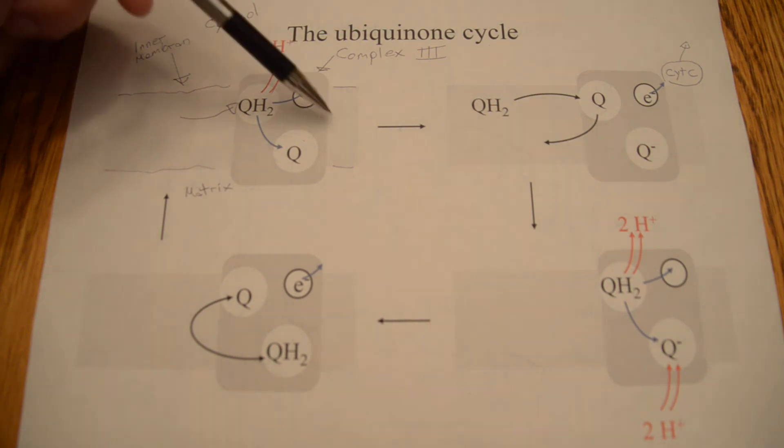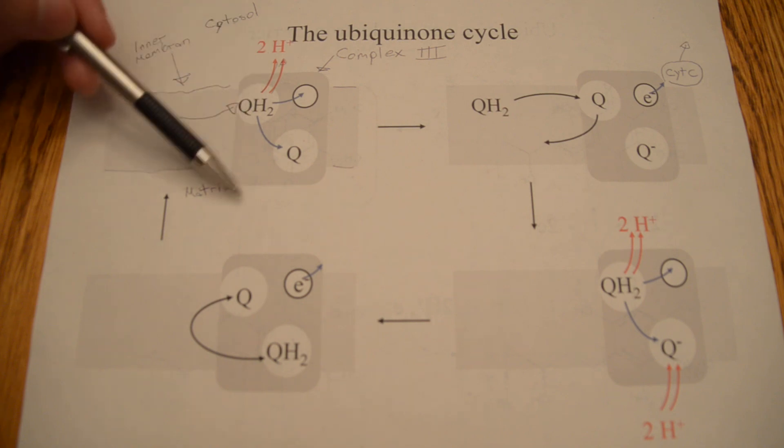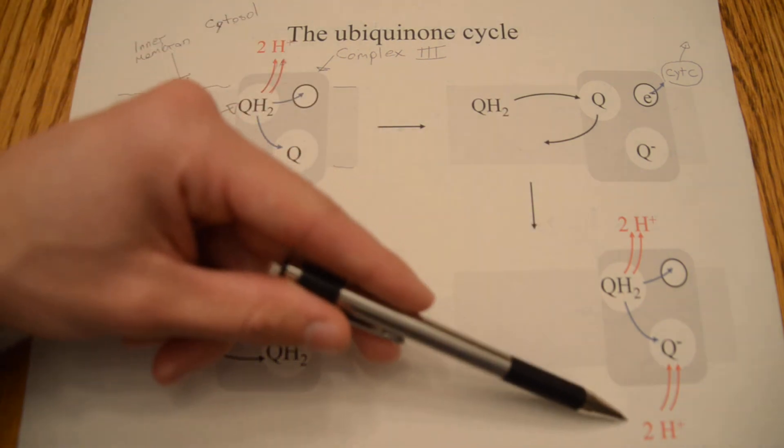Now, really, complex 3 only expels two protons across on average, but the thing is you have to remember this is an average, so even though our model shows that both are being expelled across into the cytosol, maybe sometimes two will, maybe sometimes one will, maybe sometimes it will expel both down here, and same with these things.